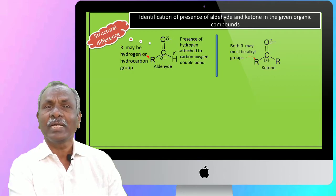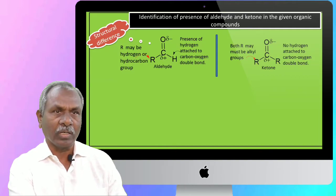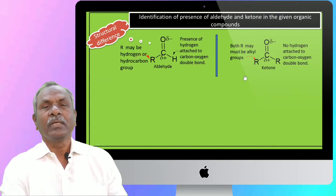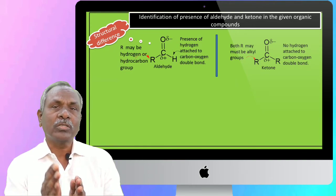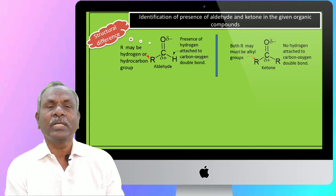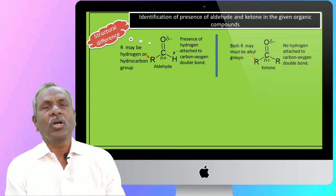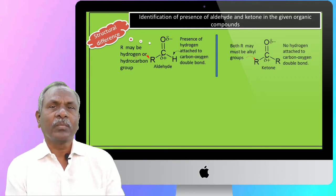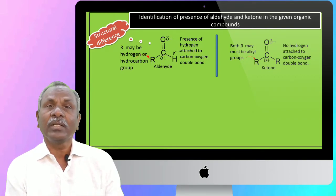In ketones, there is no hydrogen attached to the carbon-oxygen double bond. In short, we can say that aldehydes undergo oxidation, but ketones resist oxidation. Ketones can be oxidized but only by using strong oxidizing agents like CrO3 or ozone, and that oxidation involves the breaking of the carbon-carbon bond.